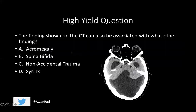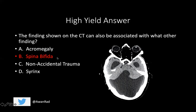Coming back to our final high yield question — the finding shown on this CT can also be associated with what other finding? The CT image shows the Dandy-Walker malformation: a large posterior fossa cyst that communicates directly with the fourth ventricle. We know this is associated with spina bifida, and that's the correct answer. Thank you so much for watching. Please tune in next week, subscribe to the channel, make this free knowledge go viral, and let's all ace the USMLE together.